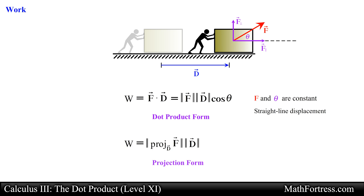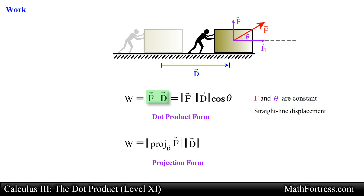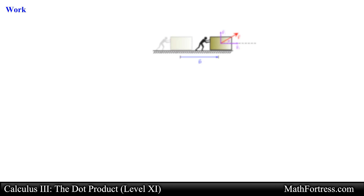We can also use the less common projection form, where the work is calculated by taking the magnitude of the projection of the constant force F onto the displacement vector D and multiplying it by the magnitude of the displacement vector. Usually the dot product form is more commonly used in most textbooks. Keep in mind that work is a scalar quantity and not a vector, since the dot product produces a scalar. Let's go over a couple of examples and illustrate how to find the work done by constant forces.